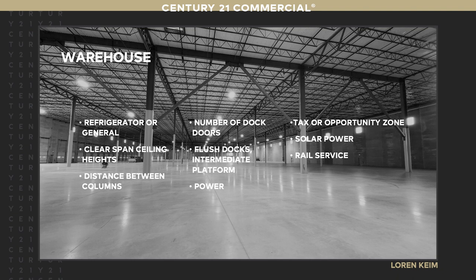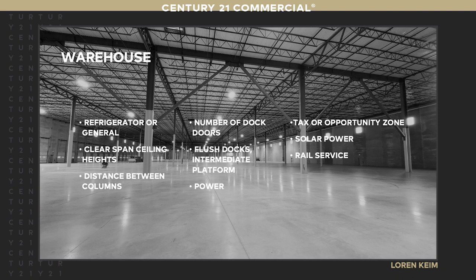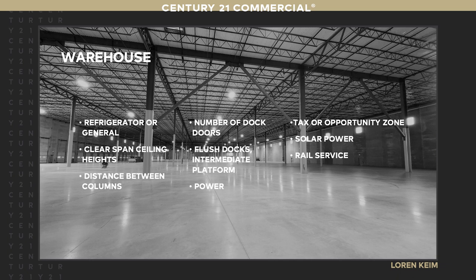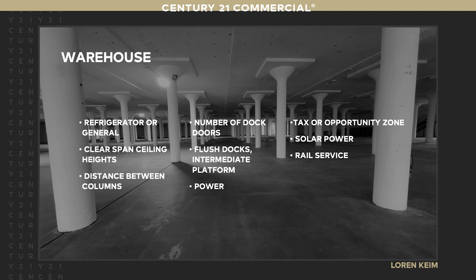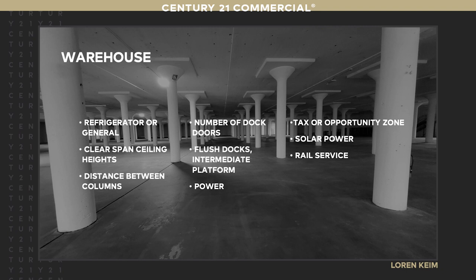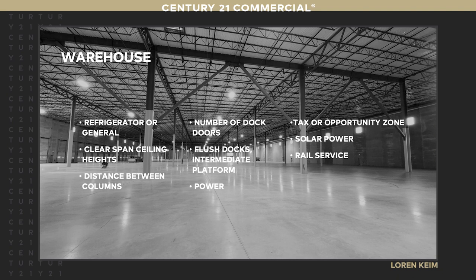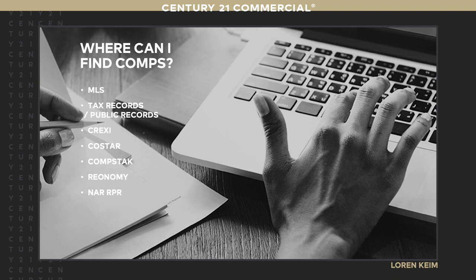For this building off I-95 between Philadelphia and New York, we look at whether it's refrigerated or general — there's a big price difference — what the clear-span ceiling height is, the distance between columns, number of dock doors, whether they're flush or intermediate platforms, how much power is coming in, whether it's in a tax or opportunity zone, whether there's solar power, and whether there's rail service. Right next door is a same-size building, but with much lower ceiling height, columns much closer together, masonry construction — you can't use it as a comp even though they're right next door.